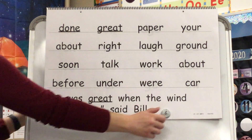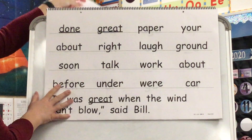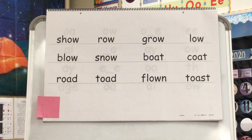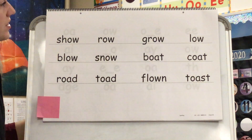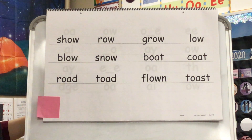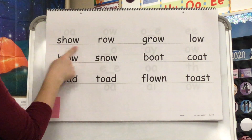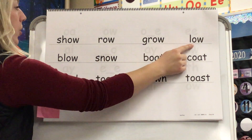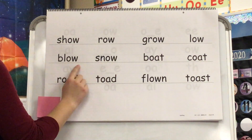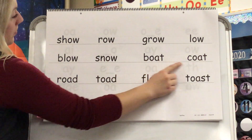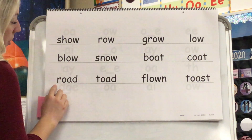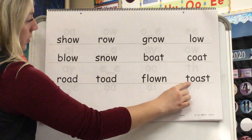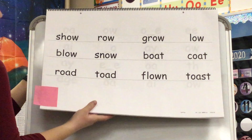Great job. Now pause the video and get out your spelling materials. These are our spelling words for the week — all of these words have the long O vowel sound. Let's read our words: Show, Row, Grow, Low, Blow, Snow, Boat, Coat, Road, Toad, Flown, Toast.